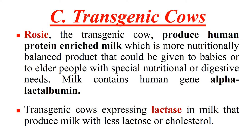Next are transgenic cows. Rosie is a transgenic cow that produces human protein in her milk, providing a more nutritionally balanced milk for babies and persons who drink it. That milk contains the human gene product alpha-lactalbumin. Similarly, transgenic cows can be developed to express the gene for the enzyme lactase in their milk, producing milk with less lactose — which is beneficial for people with lactose intolerance.